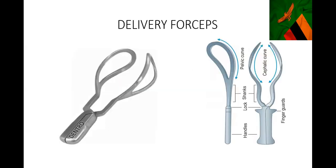We all know what this is - these are obstetric forceps. This particular one on the screen is called Wrigley's forceps. We normally use them when we are doing outlet forceps - when you are delivering a baby and you can see the head of the baby on the vulva but it can't come out. These are the forceps we would normally use for that indication.